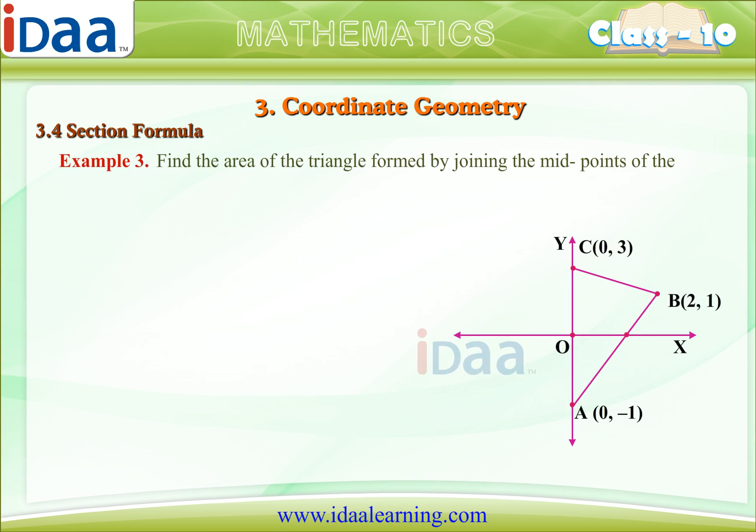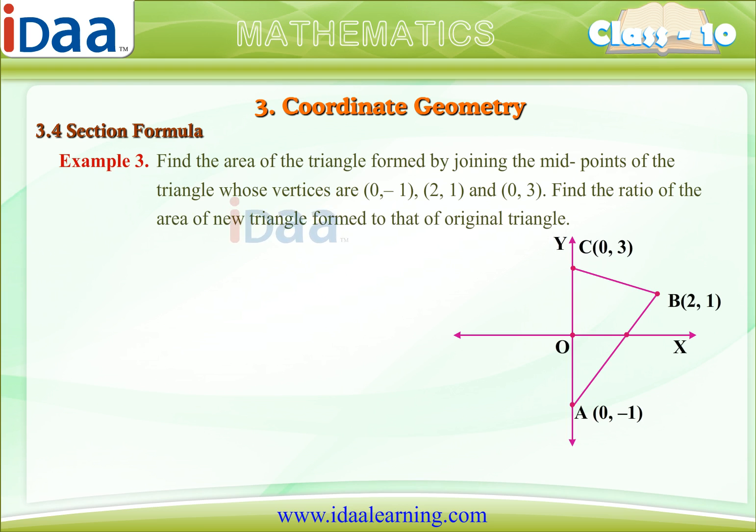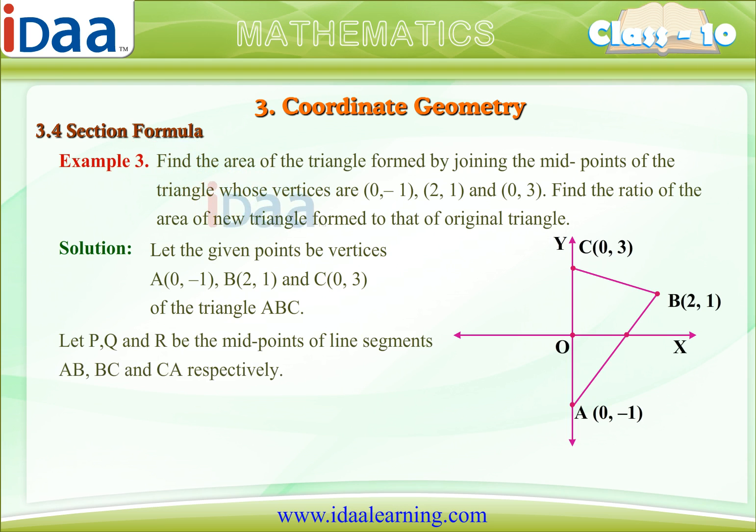Find the area of the triangle formed by joining the midpoints of the triangle whose vertices are (0,-1), (2,1) and (0,3). Find the ratio of the area of new triangle formed to that of the original triangle. We first plot the given points in a rough diagram and take them in order, counter-clockwise direction.